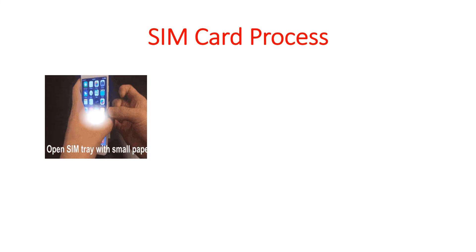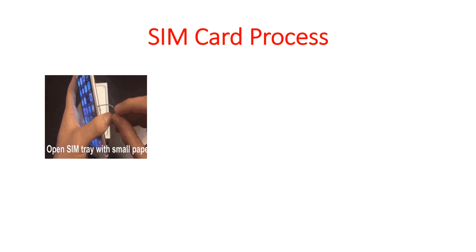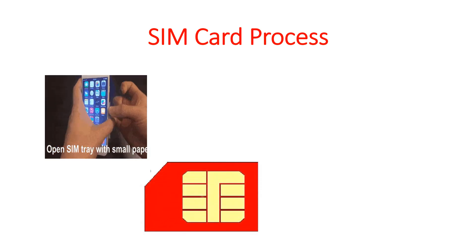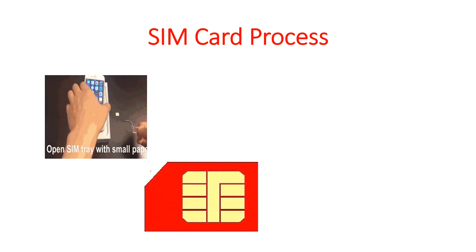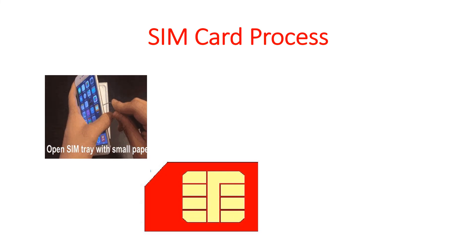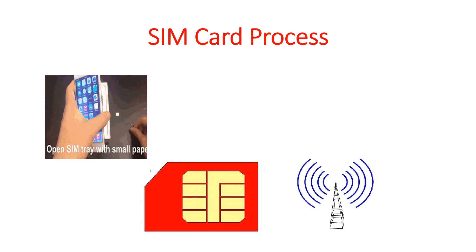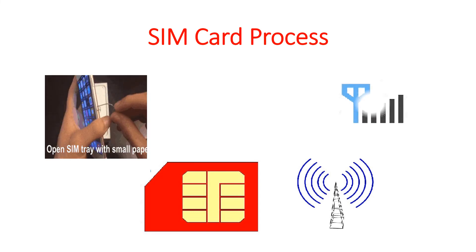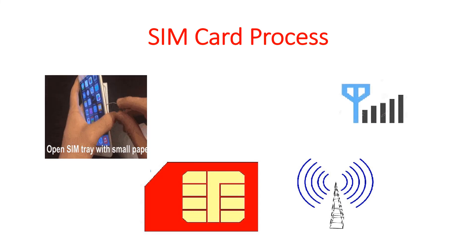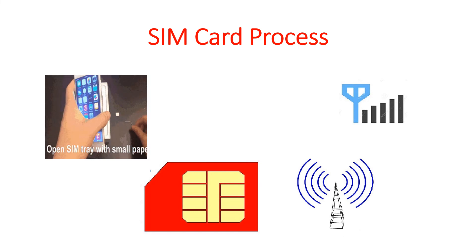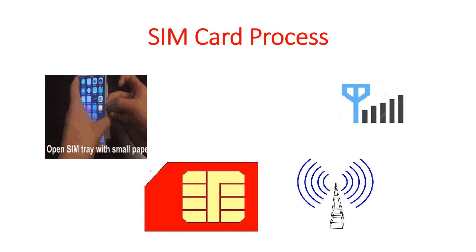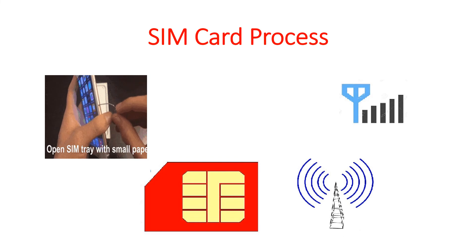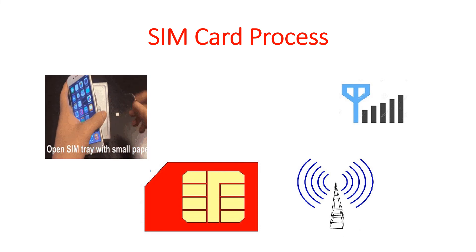Let us see the process that takes place in a SIM card. We have a phone and we are opening the SIM card tray. The SIM card is now inserted in the phone. As soon as the SIM card is inserted, depending on the signal strength, the signal level is indicated in your phone — that is, the signal strength of your cellular network is indicated in terms of bars.